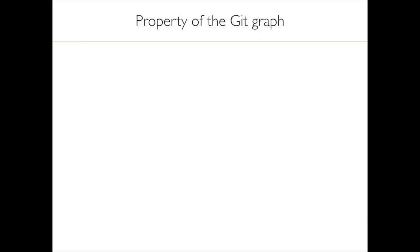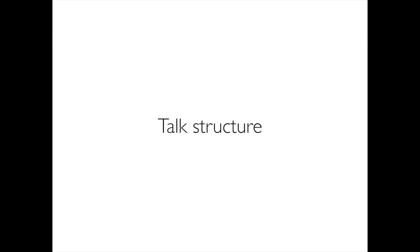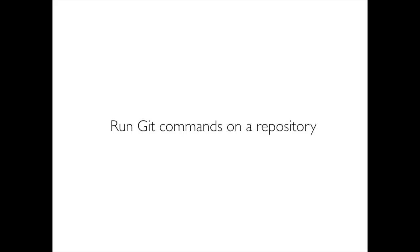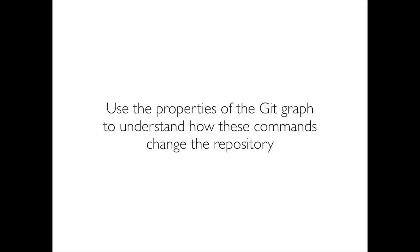There's an essay version of all of this, which is just the same content but written in prose. I also run interactive workshops on this material, so you can email me for more details. Throughout this talk, there'll be slides with a yellow bar at the top, where there'll be some property of the Git graph, and then some discussion about the resulting Git behaviour — these are the headlines of this talk. Here's an overview of the talk structure: we're going to run a ton of Git commands on a repository, and use the properties of the Git graph to understand how these commands change the repository.